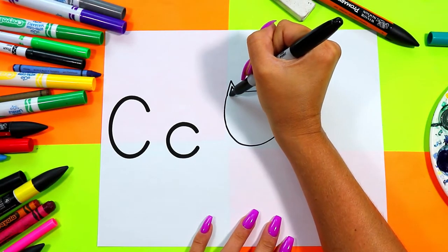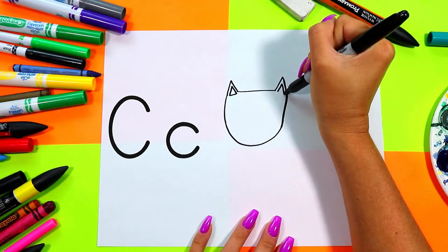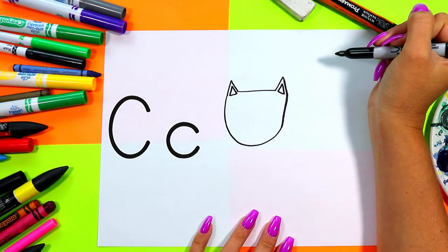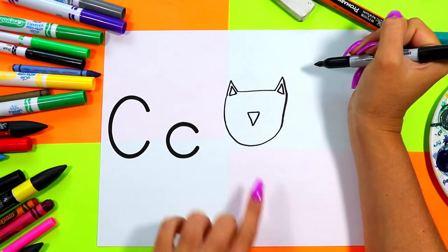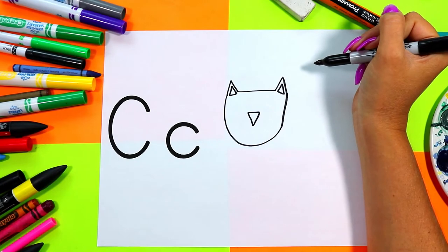Draw a triangle in each ear and an upside down triangle in the middle of the face for cat's nose.